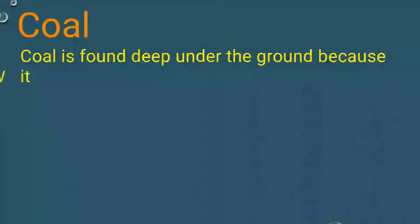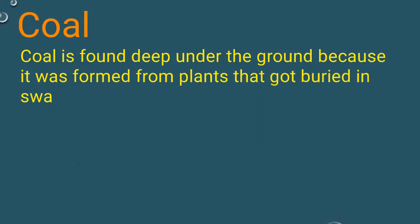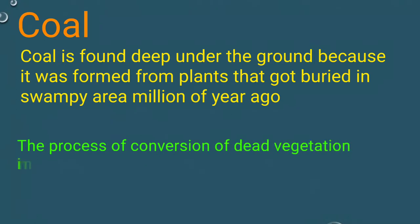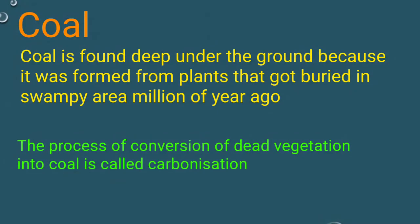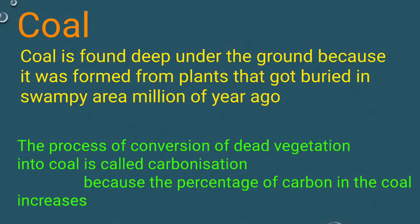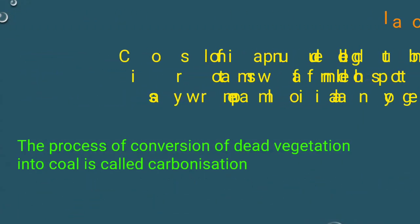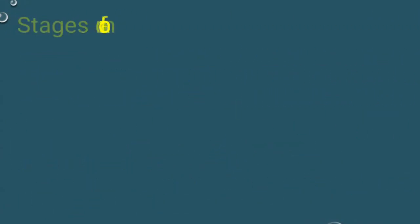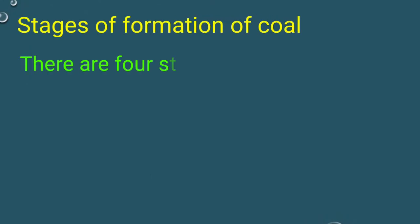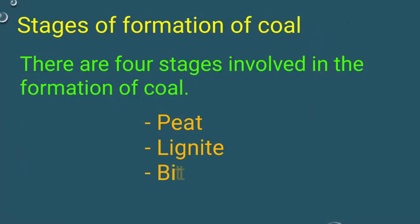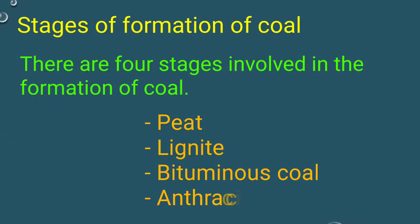Coal is found deep under the ground because it was formed from plants that got buried in swampy areas millions of years ago. The process of conversion of dead vegetation into coal is called carbonization, because the percentage of carbon in the coal increases gradually. There are four stages involved in the formation of coal: peat, lignite, bituminous coal, and anthracite coal.